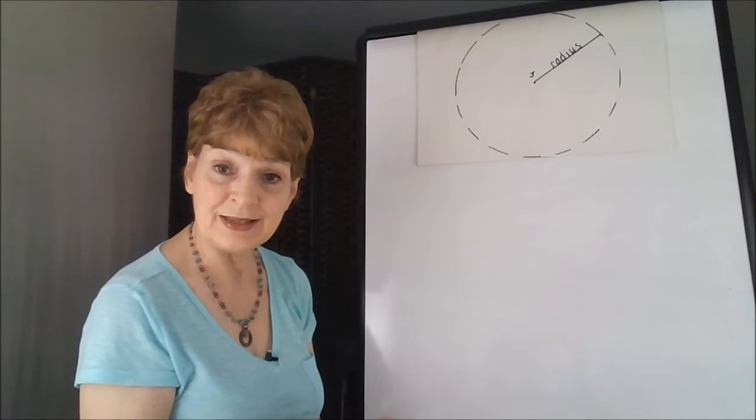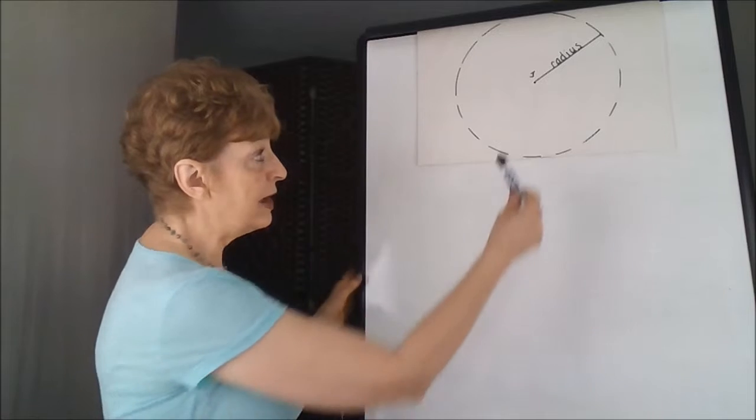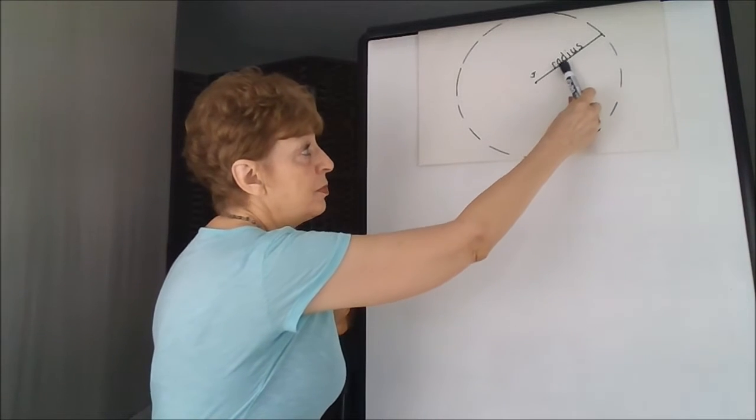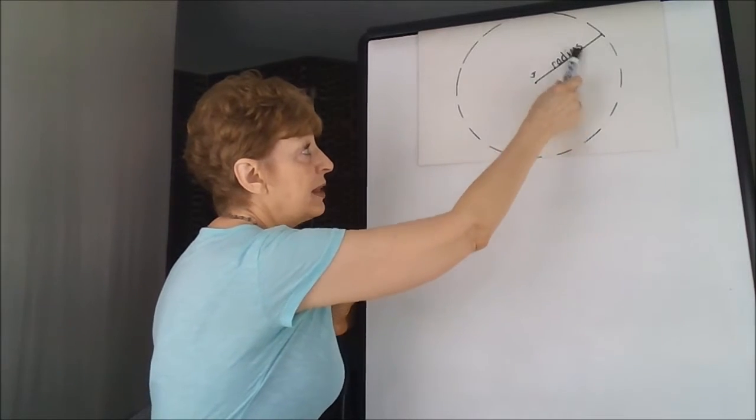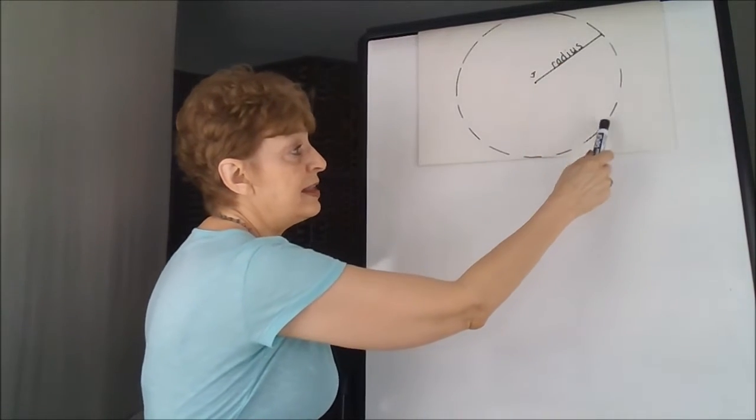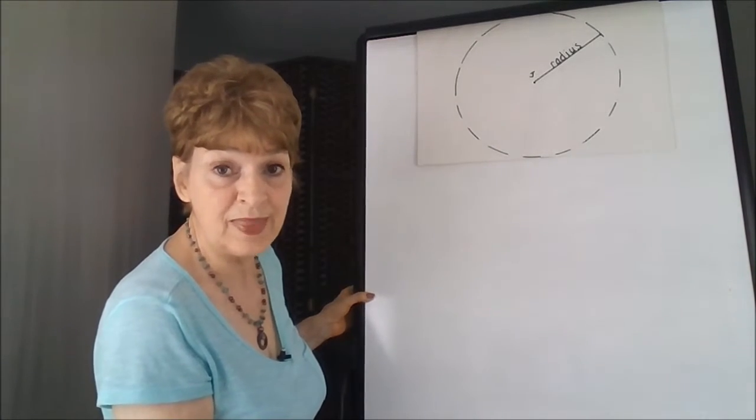So the locus of a single point is a circle. The pathway, of course, any of the points along the radius, we could make smaller and a little bit larger, a little bit larger, a little bit larger, and this is not the only locus of points around that point.